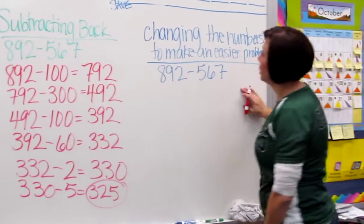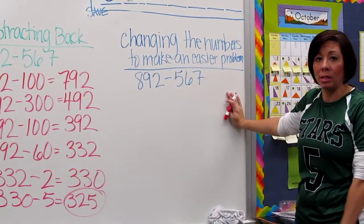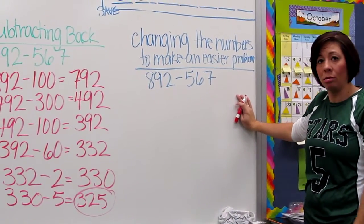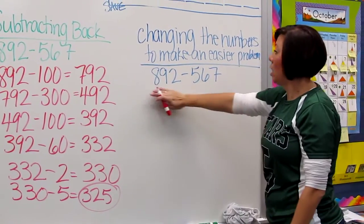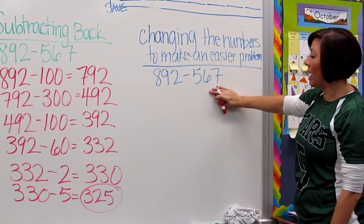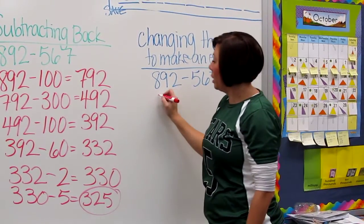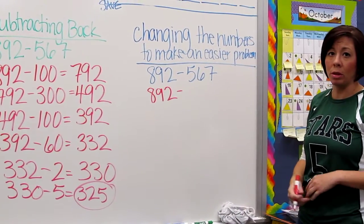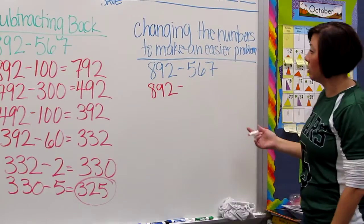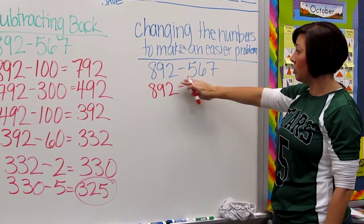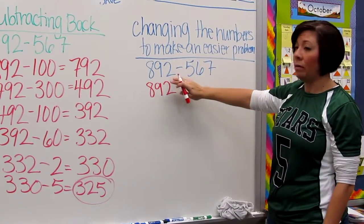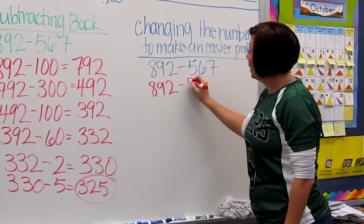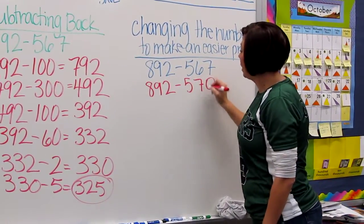This is the last one, changing the numbers to make an easier problem. This is probably the most difficult one for kids to do, but it's actually the simplest process. 892 minus 567. What you're doing is you're adjusting the numbers, one or both of the numbers, to make a problem that's easier to solve. For example, on this one, 567 would be difficult to do in my head. So I might change it to 570 to make an easier problem to do.